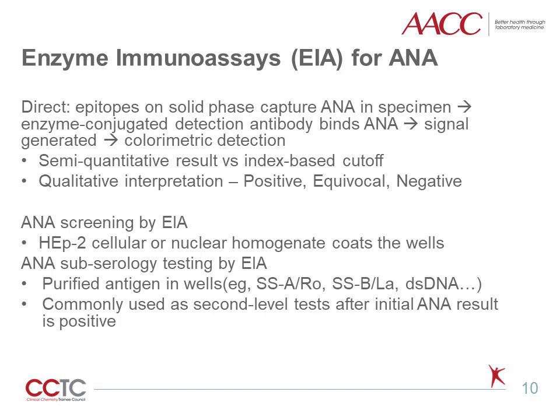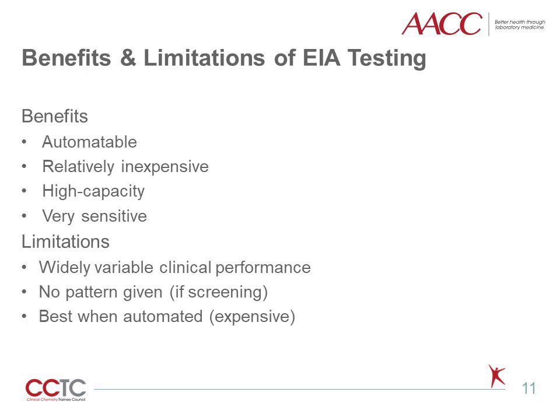ELISA-based testing for ANA can take two different forms. The first form can serve as a general screening assay, made possible by presenting HEP2 cell or nuclear homogenates or a blend of purified common antigens in the assay wells. The second form of ELISA-based ANA testing targets specific antigens associated with IFA staining patterns — this approach is called subserology testing, and it commonly serves as a second-line test after a positive ANA pattern is detected. Benefits of ELISA-based ANA testing include the ability to automate, avoidance of dilution series for screening, and relatively inexpensive reagents. The level of technical expertise required is also lower, and high plate capacities allow for large batches, making for efficient work in high-volume laboratories.